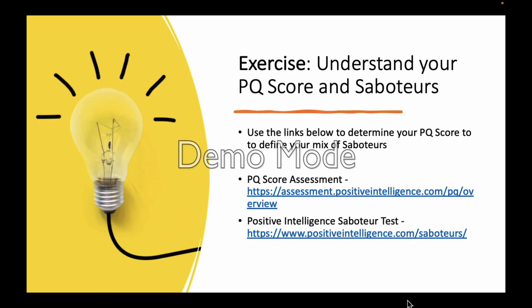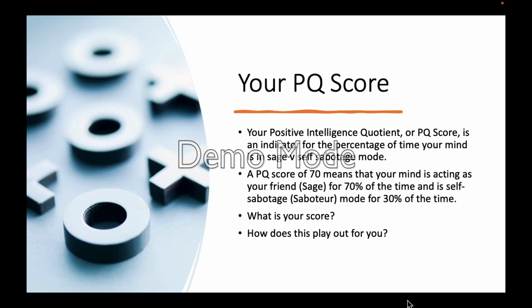In the previous video, we asked you to go and get your PQ score and understand what your saboteurs are — there are links below if you haven't got them already. So let's talk about your PQ score. Your PQ score is your Positive Intelligence Quotient, an indicator of the percentage of time your mind is in sage versus self-sabotage modes. A PQ score of 70 means your mind is acting as your friend — a sage — for 70% of the time and in self-sabotage mode for 30% of the time. There's a wide range of PQ scores; obviously the higher the better, but it means we've all got some work to do.